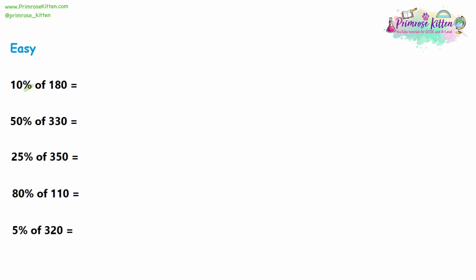We're gonna have a look at the 10%. Some calculators have a percentage button, but if they don't, what you can do is type in 0.10. The tens column is the first decimal place, and the units column is the second decimal place. So that's how you write 10% into a calculator without a percentage button. The 'of' in the question is just the multiply button. So if you type 0.10 multiplied by 180 into a calculator, you should get 18, and 18 is the answer.